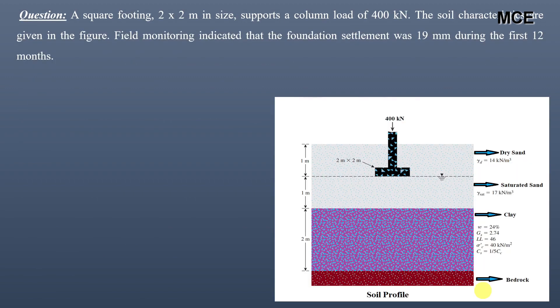In most cases we are not interested in how much a given point in a layer has consolidated. Rather, we are interested in the average degree of consolidation of the entire layer — a measure of how much the entire layer has consolidated, which can be directly related to the total settlement at a given time after loading. Welcome back to the Master Civil Engineering channel. In this video we will learn how to find the average degree of consolidation as well as settlement at any time after loading.